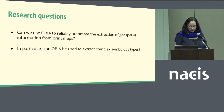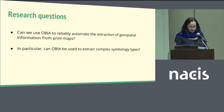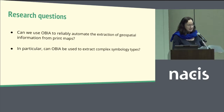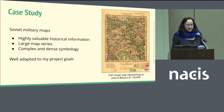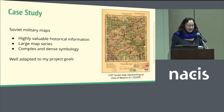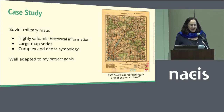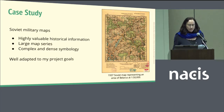My research questions are: can we use OBA to reliably automate the extraction of geospatial information from print maps? And in particular, can OBA be used to extract complex symbology types? I chose historical Soviet military maps as my case study for several reasons. They are fascinating maps full of valuable historical information. They also contain complex and dense symbology, which was the perfect case for OBA. And finally, they come in very large map series, which is important because putting a feature extraction workflow into place is time-consuming, and it only makes sense to do it if it can be applied to many maps.